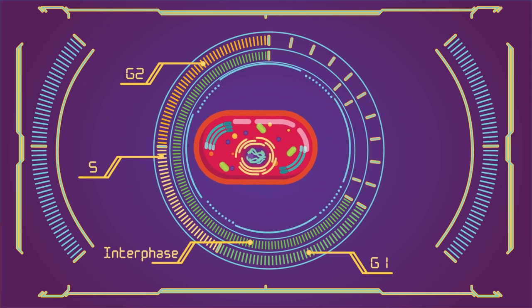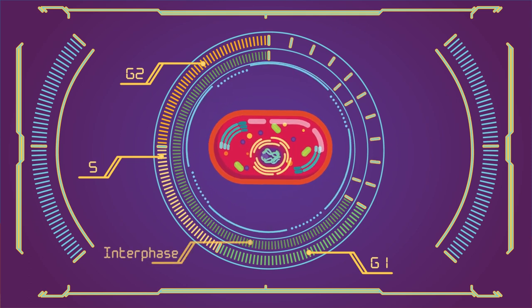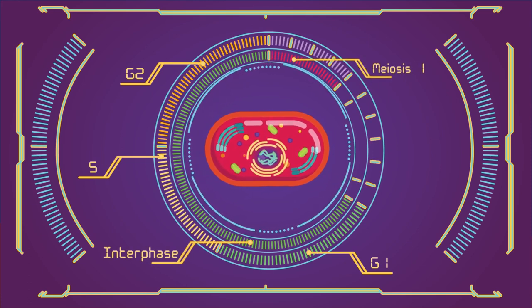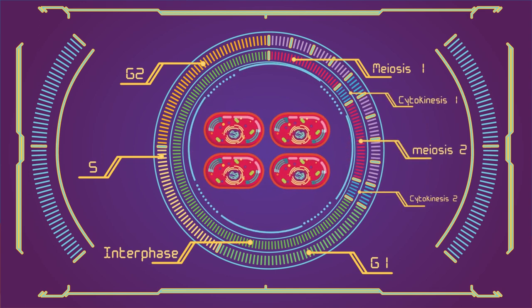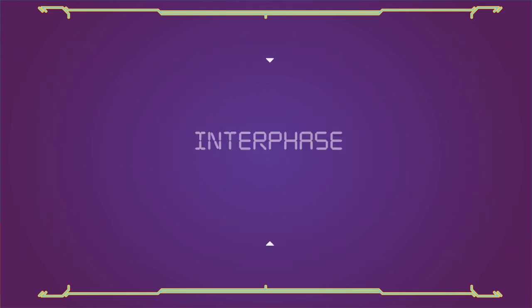Here are the distinct phases of meiosis: Interphase, Meiosis 1, Cytokinesis 1, Meiosis 2, Cytokinesis 2. First at interphase.